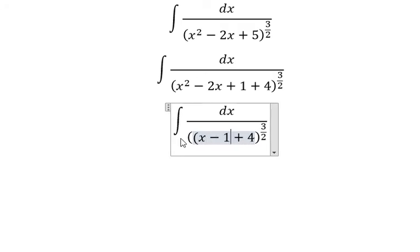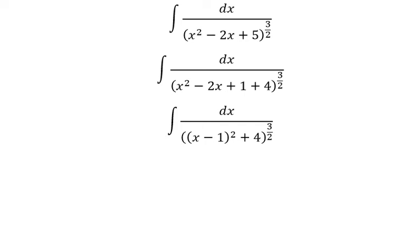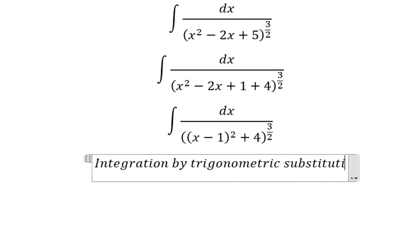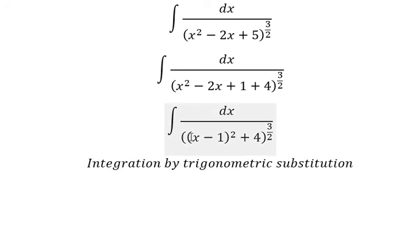Everything to the power of two. Next we need to use integration by trigonometric substitution. We have x minus 1 in here, so we can set x minus 1 equal to 2 times tan t.